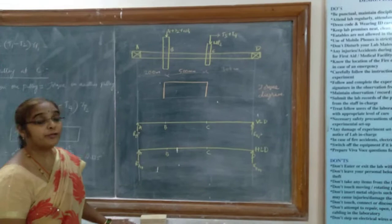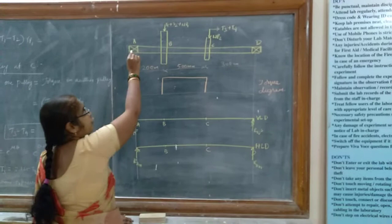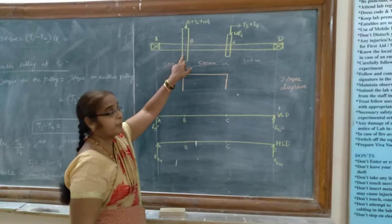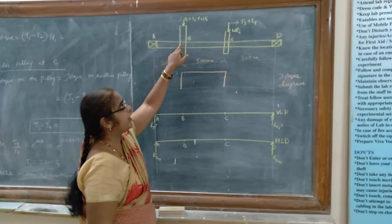Today let us solve a problem on shafts. We are going to design the shaft. Here is the shaft which is mounted between two bearings — this is one bearing and this is another bearing. This shaft is provided with a pulley at B and another pulley at C.